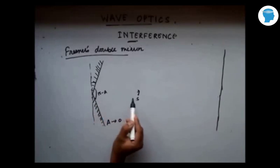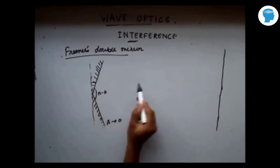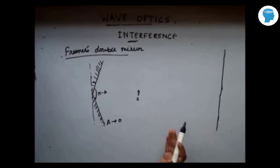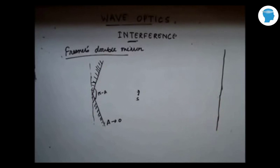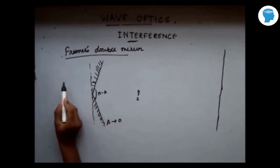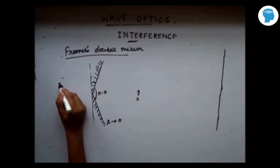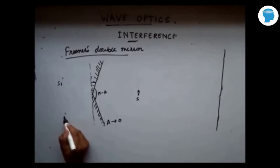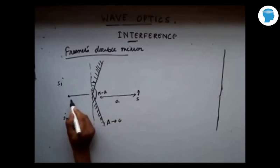For the first mirror, light waves hit it and get reflected. For the second mirror, light waves hit it and get reflected. So after reflection from these two mirrors, we have two waves coming and hitting the screen. This mirror forms an image of the object at S1, and this mirror forms an image of the object at S2. Let's say this distance is A, and this distance is also A.